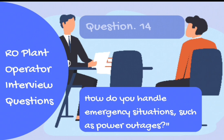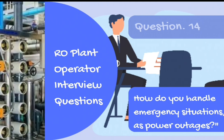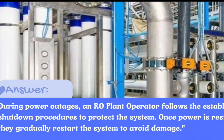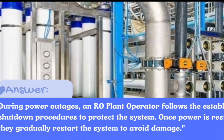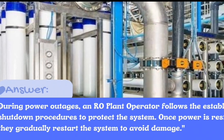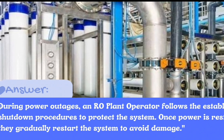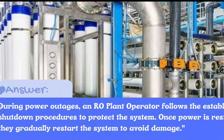Question number 14: How do you handle emergency situations, such as power outages? Answer: During power outages, an RO plant operator follows the established shutdown procedures to protect the system. Once power is restored, they gradually restart the system to avoid damage.